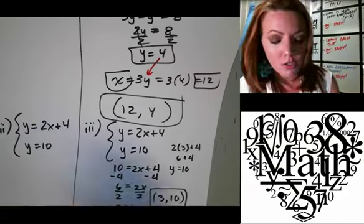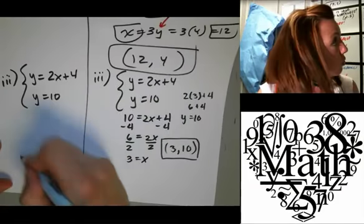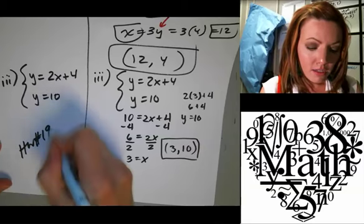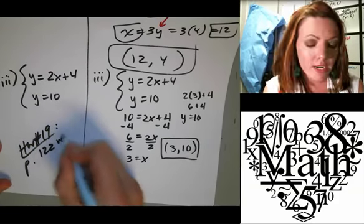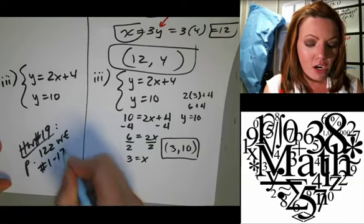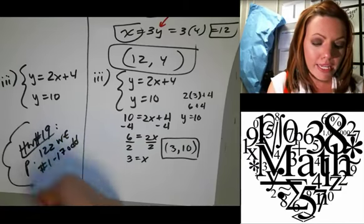Okay, so your homework, homework number 19, it is page 122, written exercises, numbers 1 to 17 odd. I am going to let the music take us away.